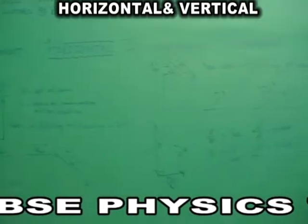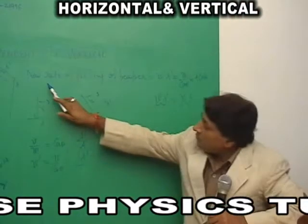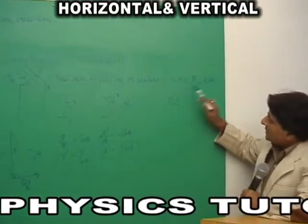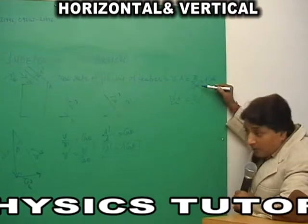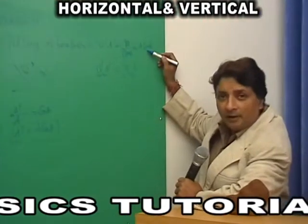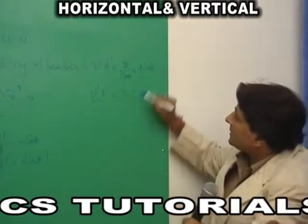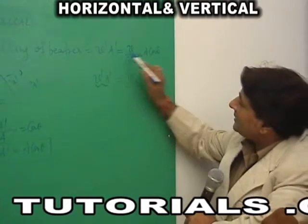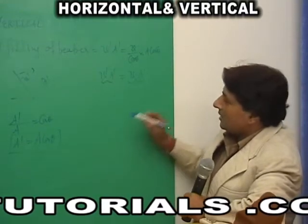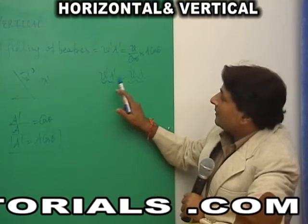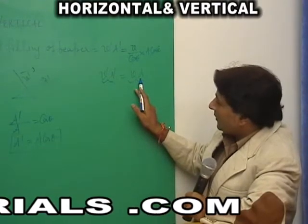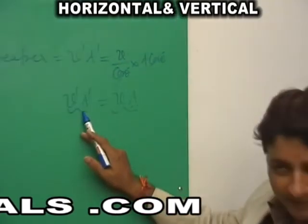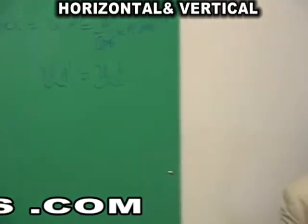What do you find? The new rate of filling of the beaker is V dash into A dash, that is (V / cos theta) into (A cos theta). So cos theta gets cancelled, and V dash A dash equals V A — meaning the rate of filling of the beaker before horizontal wind was blowing and after is the same. Conclusion: horizontal and vertical motions are independent of each other.